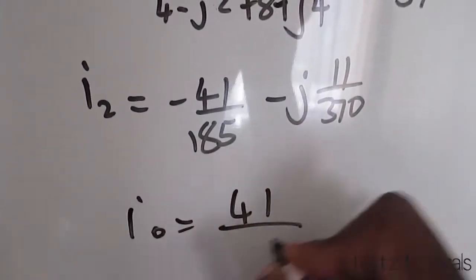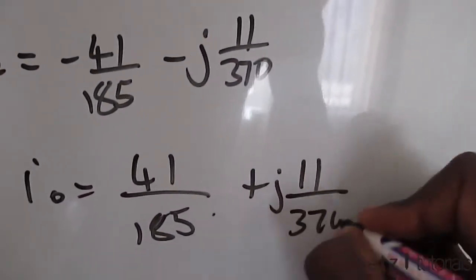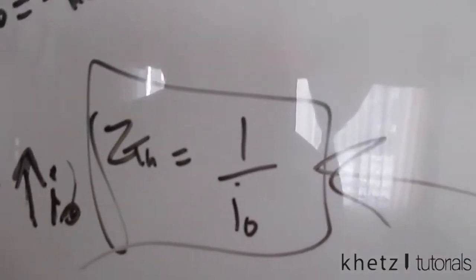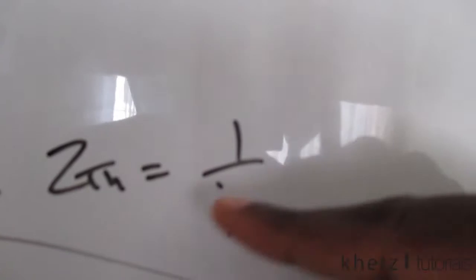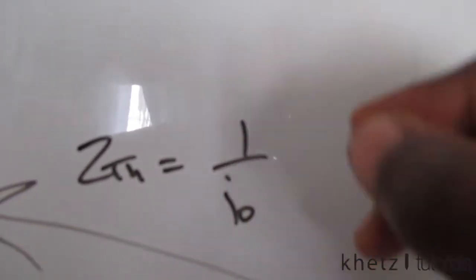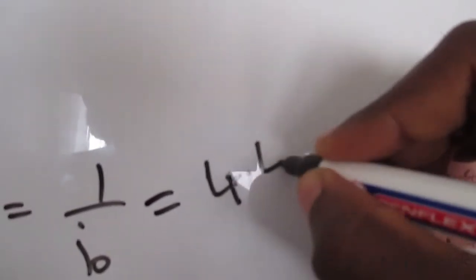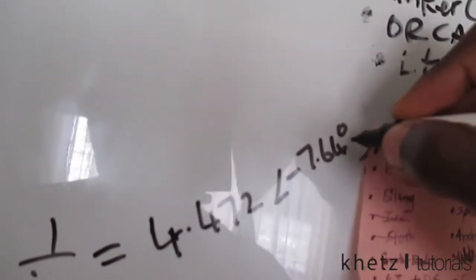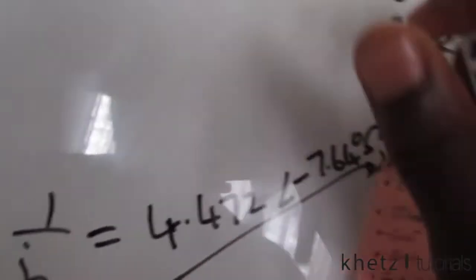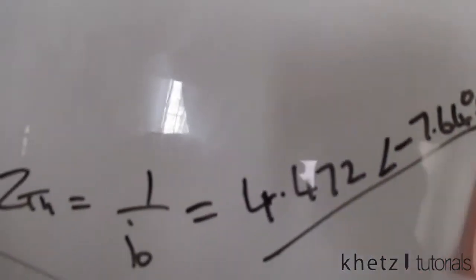Now that we have IO we can find ZTH = 1 / IO. Substituting the value of IO just found, ZTH = 4.472 ∠ −7.64°, in ohms. That is the answer for ZTH.